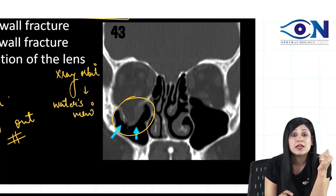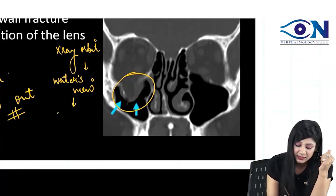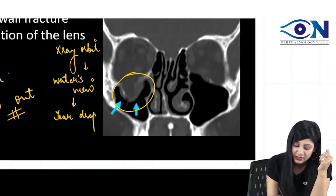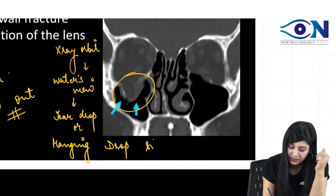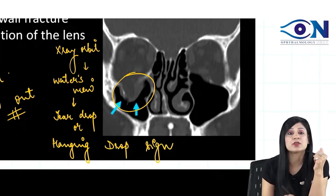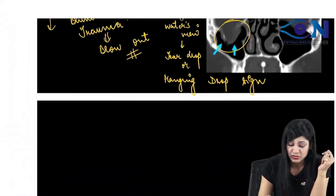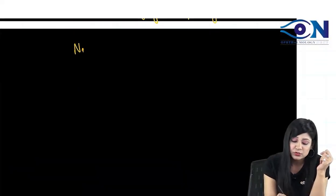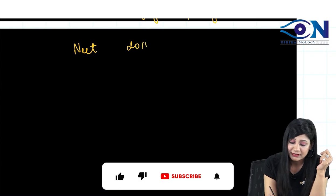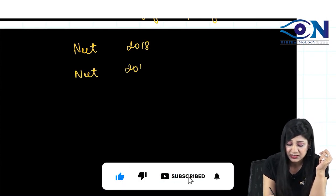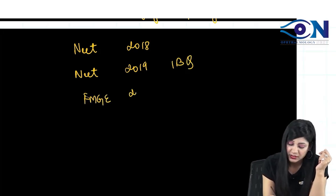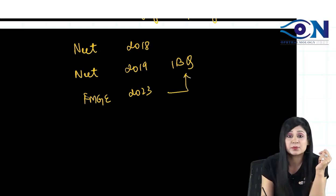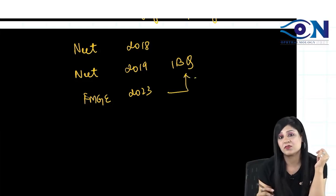The view is the Water's view, and the sign that we get here is the teardrop sign, also called the hanging drop sign, that we are going to get on the X-ray orbit. This is a very, very important question that has been asked so many times — NEET PG 2018, NEET 2019, and FMG 2023 also had this image-based question. So, again a very, very important topic.